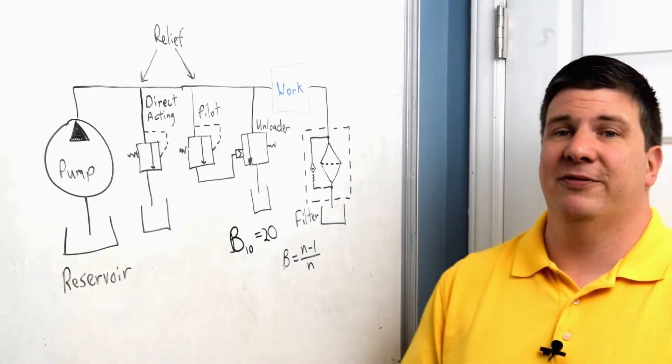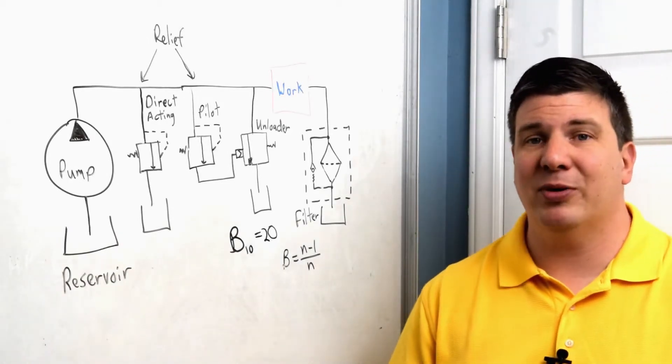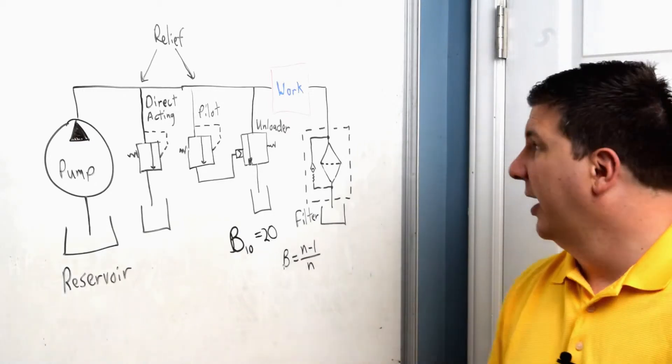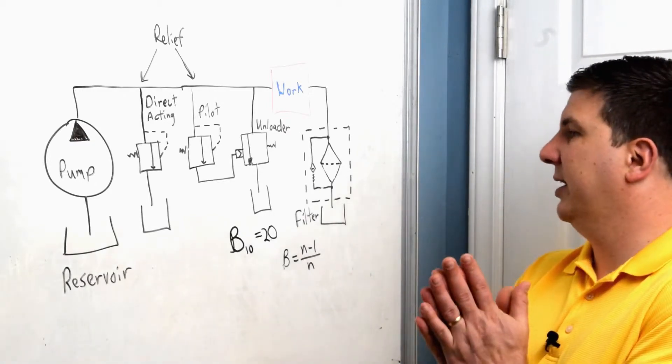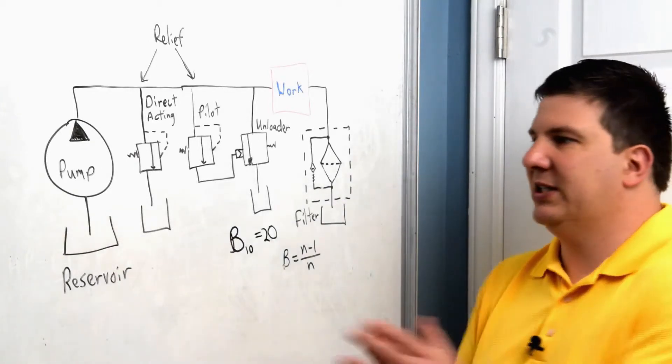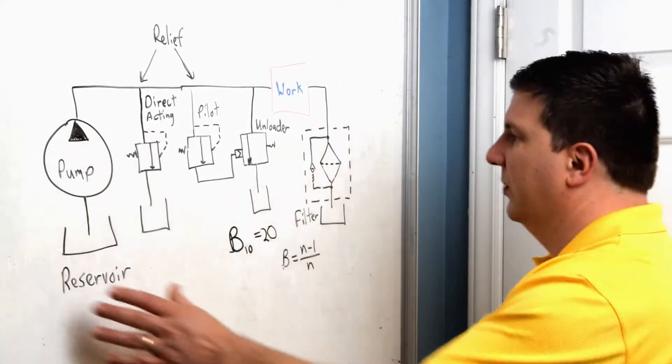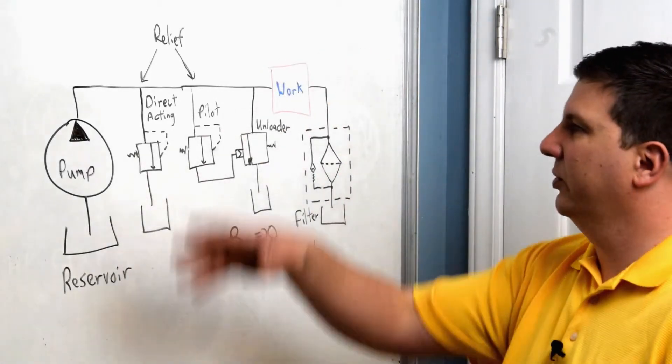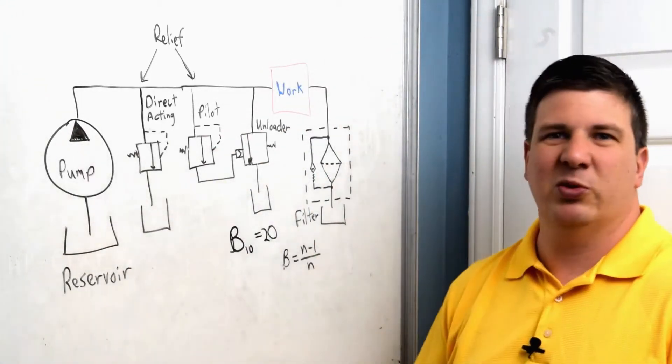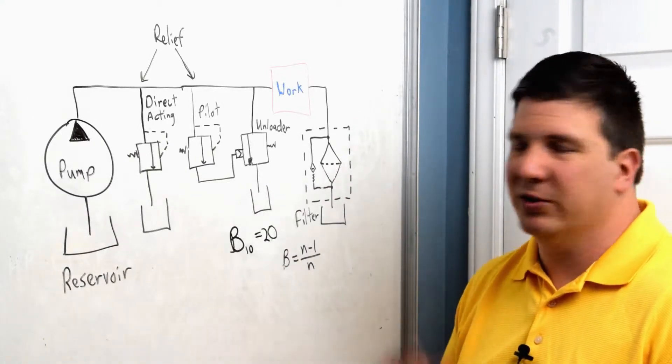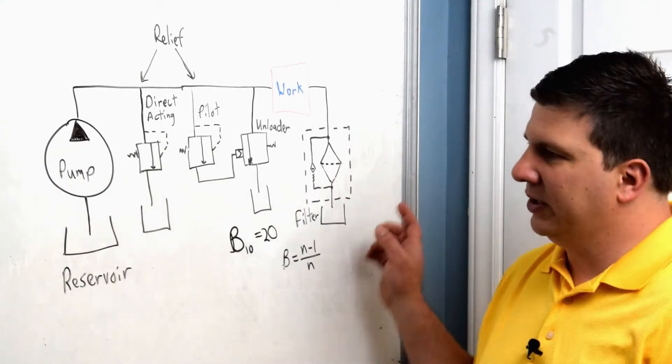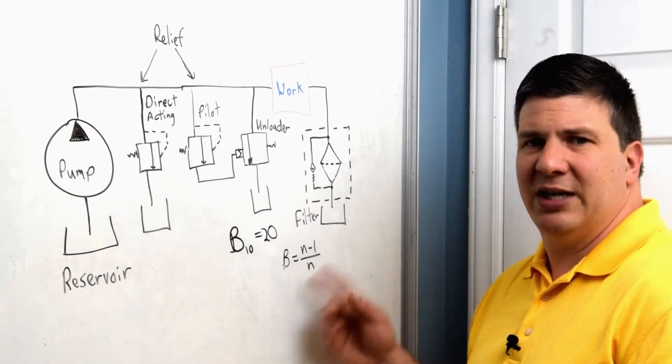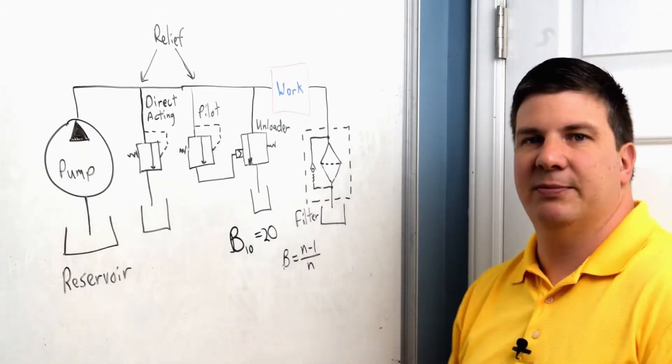So now let's talk about the filter location. Now, my personal preference is to always put it on the return line. So part of this is, if I have a clean tank when it starts off and I just run the system through and clean up the oil a bunch before I really ever use it, just running it through, I'm cleaning that oil as it's coming back. And that oil will stay fairly clean in the tank.